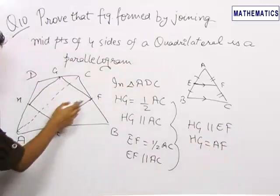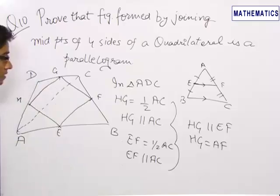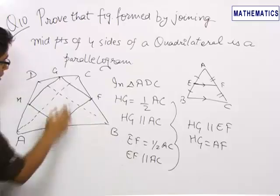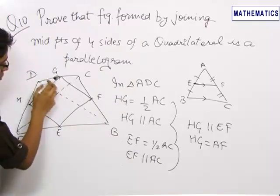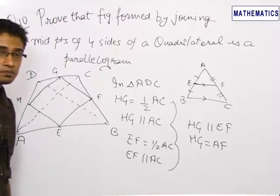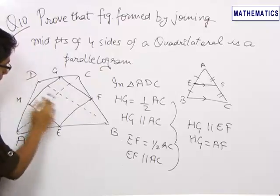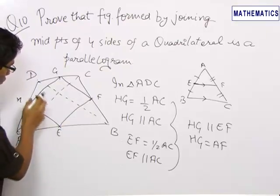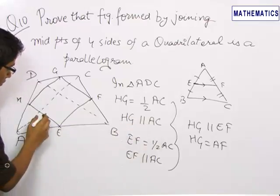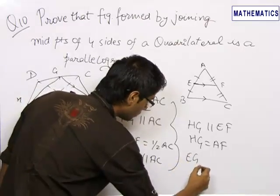So we can clearly see in this figure we have got one pair of parallel sides and equal sides. Similarly, if we join the diagonal BD — in triangle CDB, we have GF equal to half of DB and GF parallel to DB, and similarly in triangle ADB we have EH parallel to DB and EH equal to half of DB. So in the same way as we did earlier, we get EH is parallel to GF and EH is equal to GF.